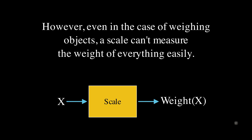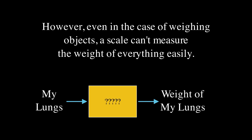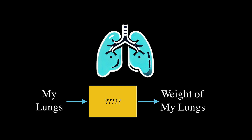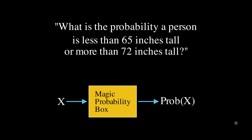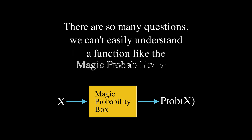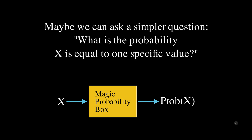However, even in the case of weighing objects, a scale can't measure the weight of everything easily. For instance, if I wanted to measure the weight of my lungs, I could not do that with a scale — my lungs are inside my body, and I would have to cut them out to put them on a scale, which would be bad. And just like there are too many complicated body parts, there are too many complicated probability questions. There are so many questions that we can't easily understand a function like the magic probability box, but maybe we can ask a simpler question.